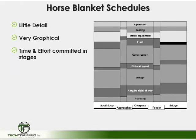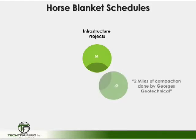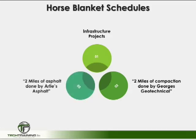A schedule system that may show even less detail is called the horse blanket scheduling system. It is very graphical and shows relative levels of effort or time committed to particular stages of the project as it evolves. A good example is an infrastructure project where two miles of roadway contracted to a particular contractor is listed simply as two miles of roadway done by G.C. Jones. This type of schedule lets the CM know which contractor will be completing which work and how much time they have to do it.